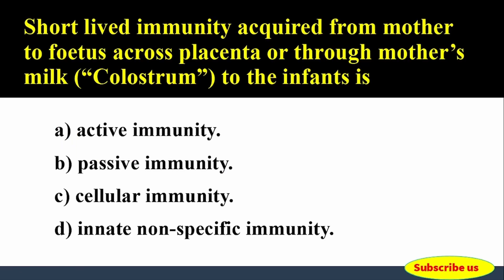Next question: Short-lived immunity acquired from mother to fetus across the placenta, or through mother's milk (colostrum) to the infant, is classified as which type? Options: A) Active immunity, B) Cellular immunity, C) Innate, D) Non-specific immunity.